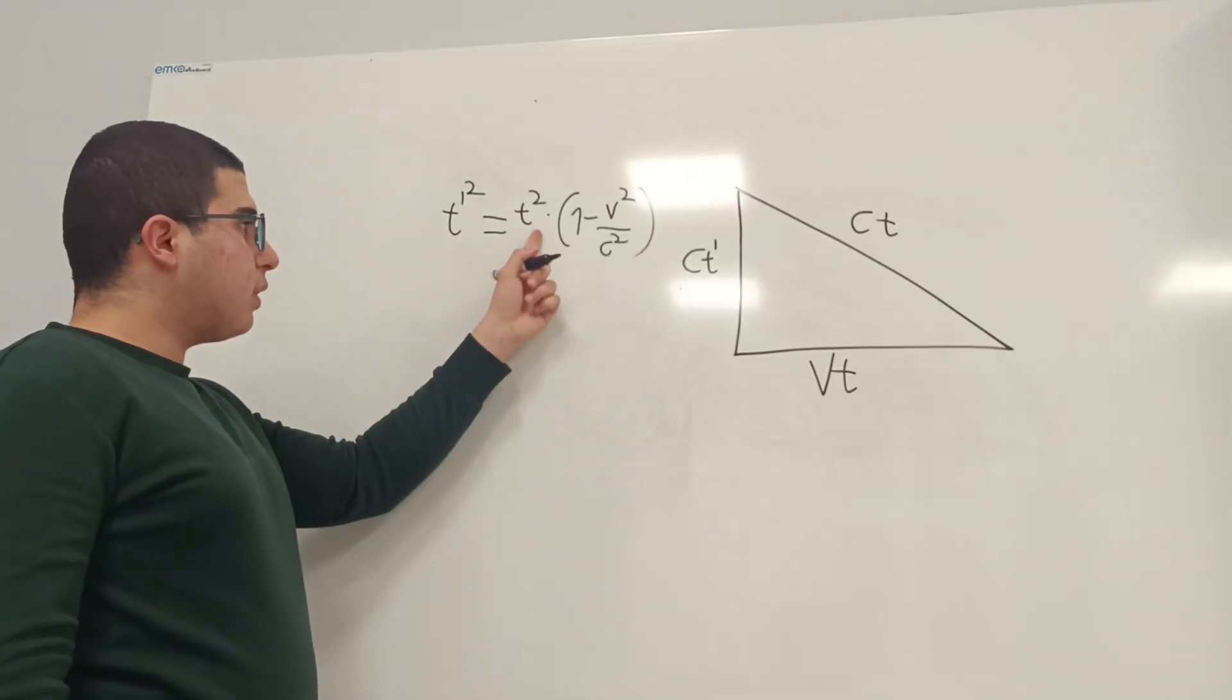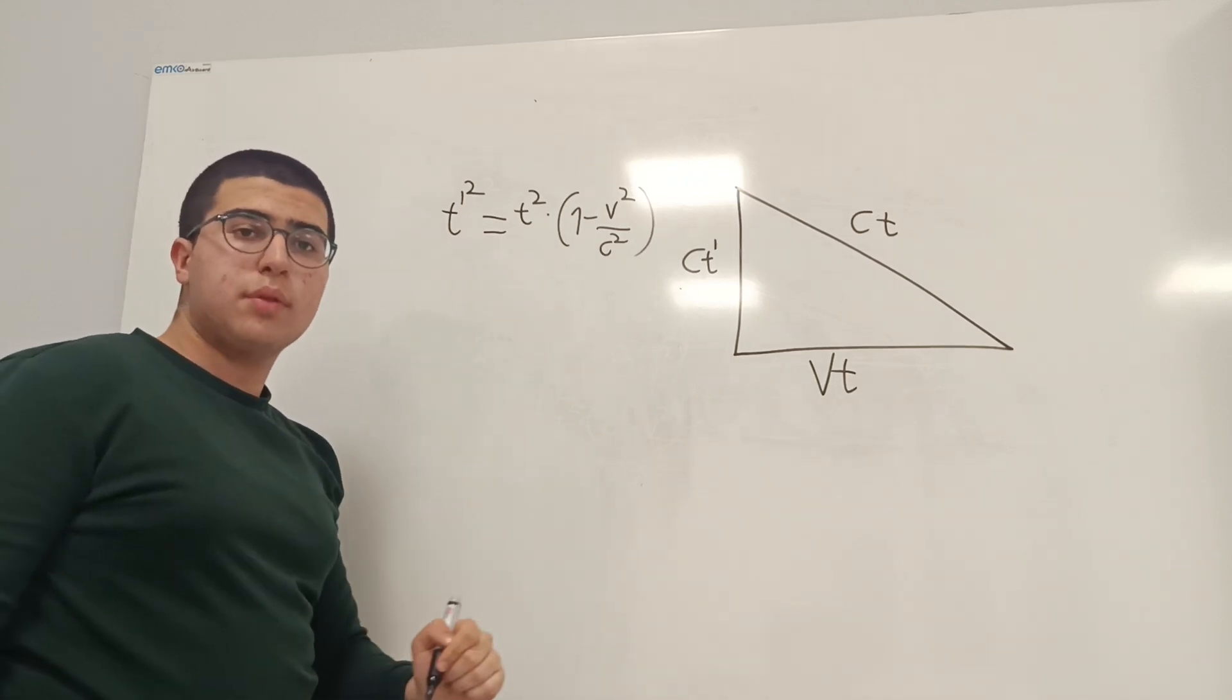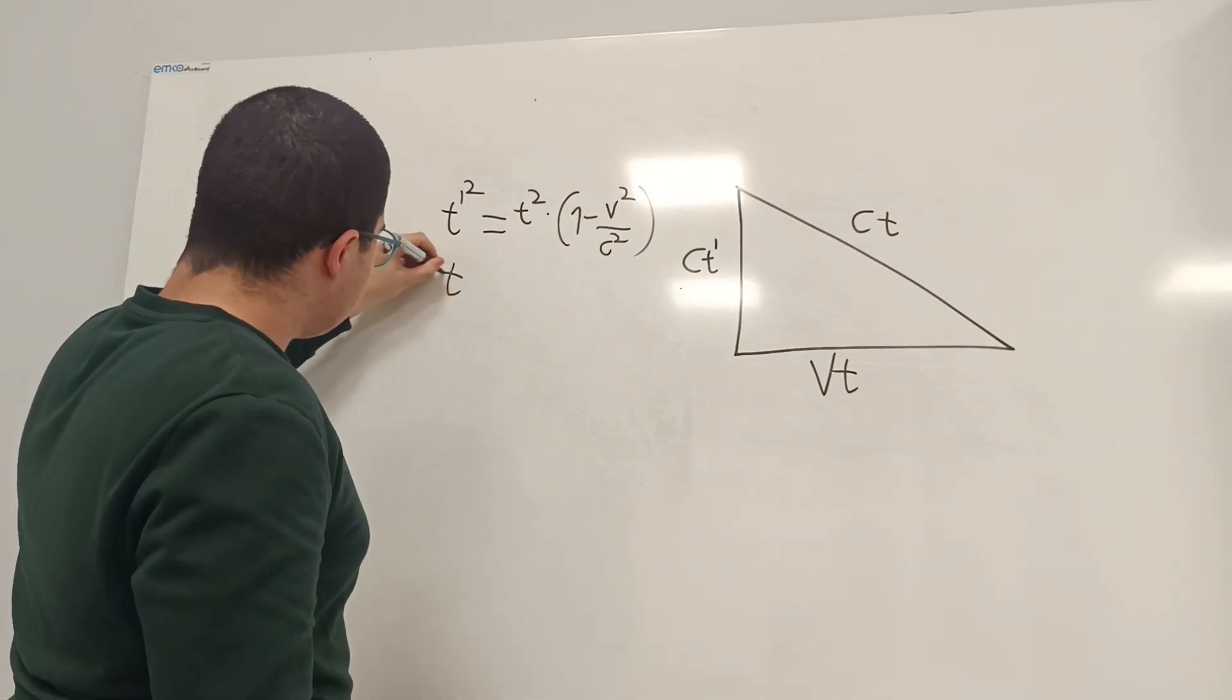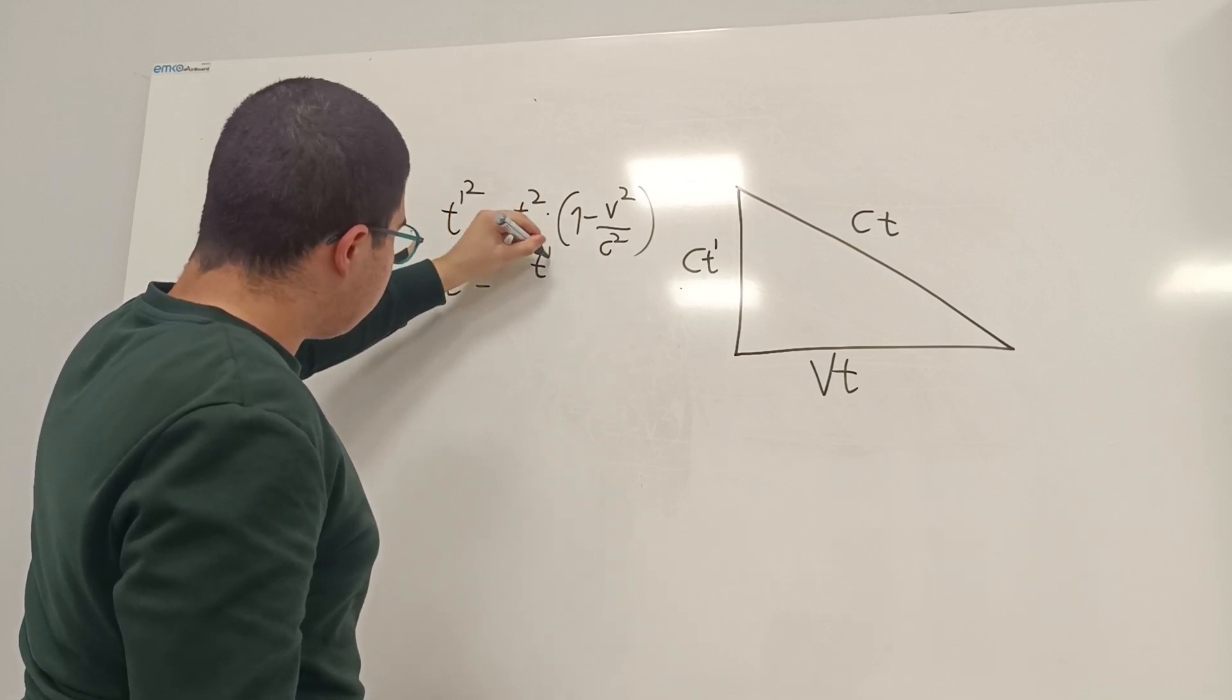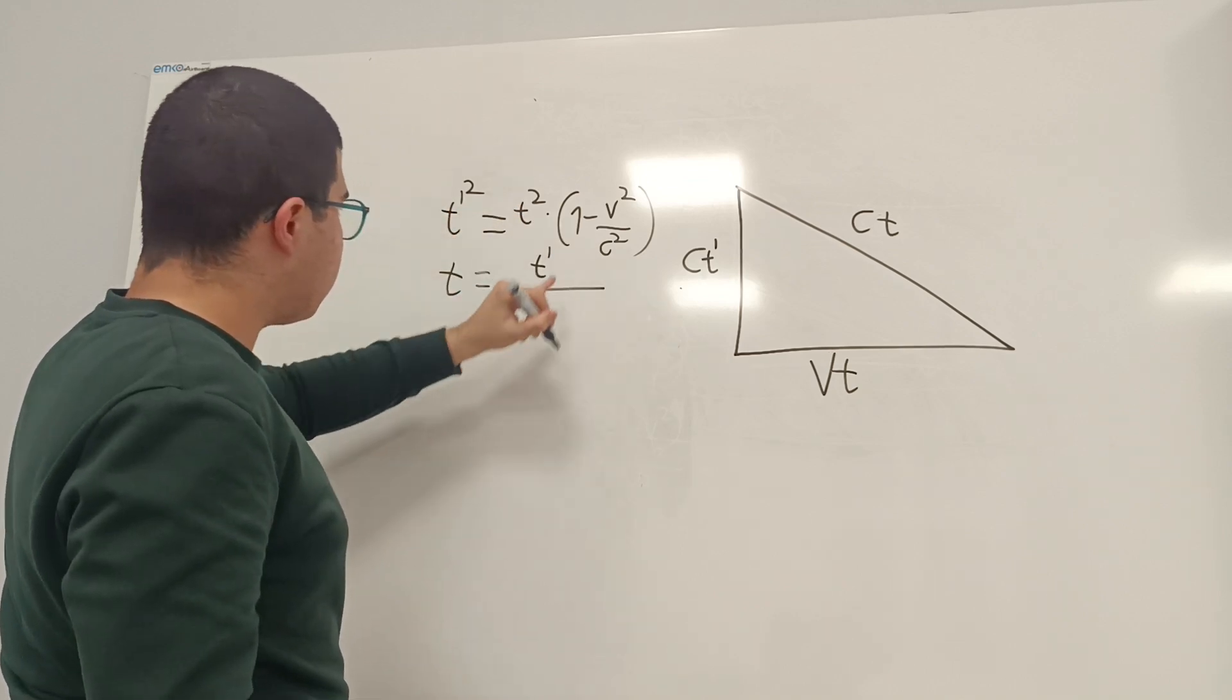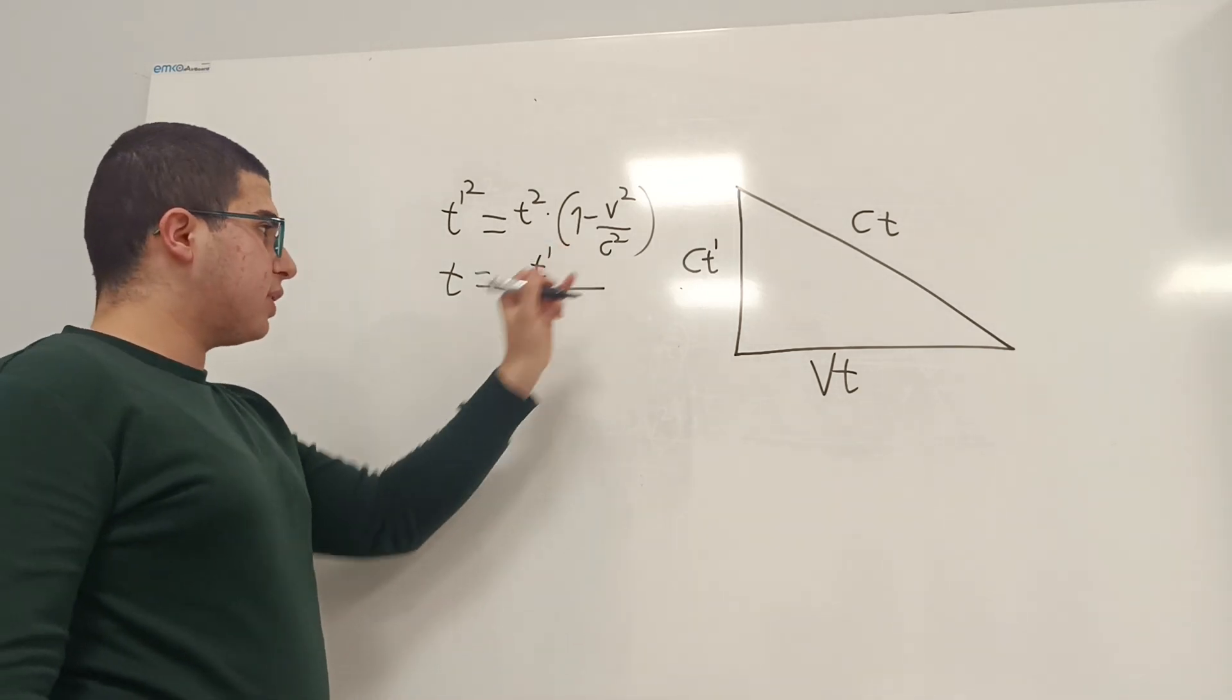And now, if we send this term to the other side, and take the square root of both sides, we will get t here is equal to t prime divided by the square root of this expression.